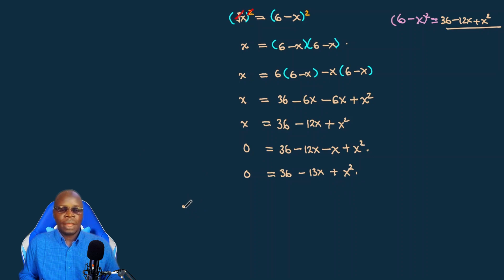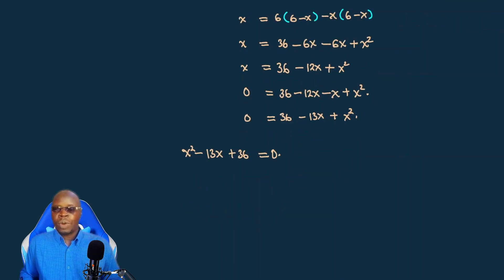And we have our x squared minus 13x plus 36 equals zero. Feel free to use any of the four methods you know for solving quadratic equations. For now I'm going with factorization method.